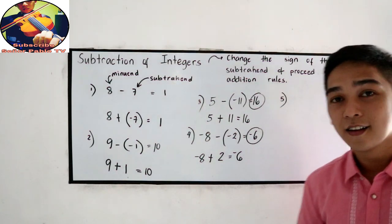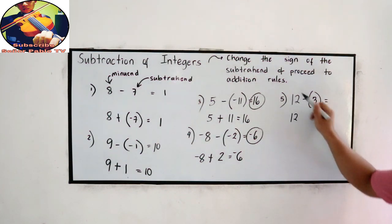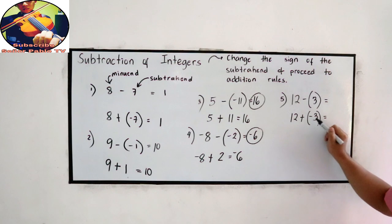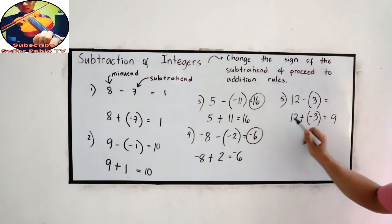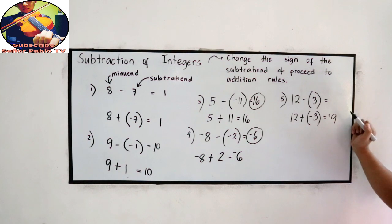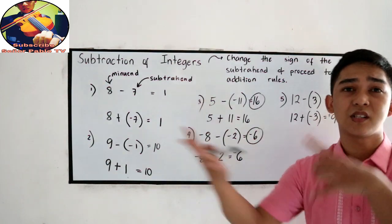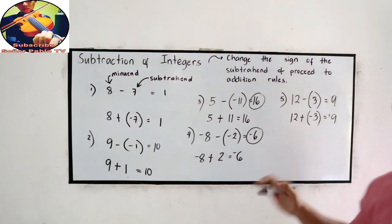Number 5. 12 minus 3. So we have 12, copy. Change the sign minus, so it will become negative 3. Then change to addition. So that is 12 minus 3, that is 9. Greater absolute value is 12, so that is positive 9. And this is also 12 minus 3, elementary math, that is 9. If you can solve it mentally, or our rule is the same as our elementary math, then don't hesitate to answer.